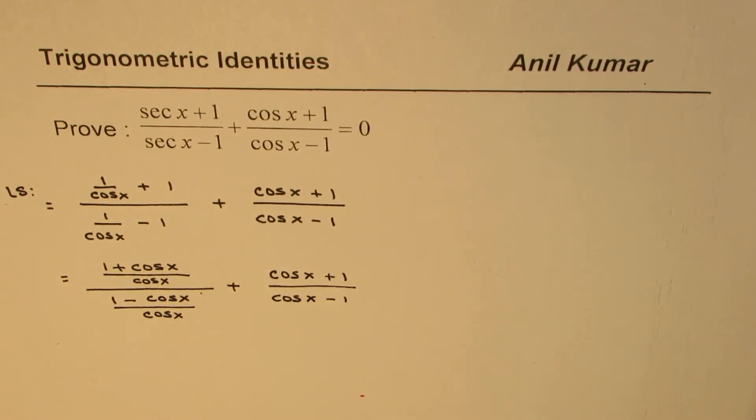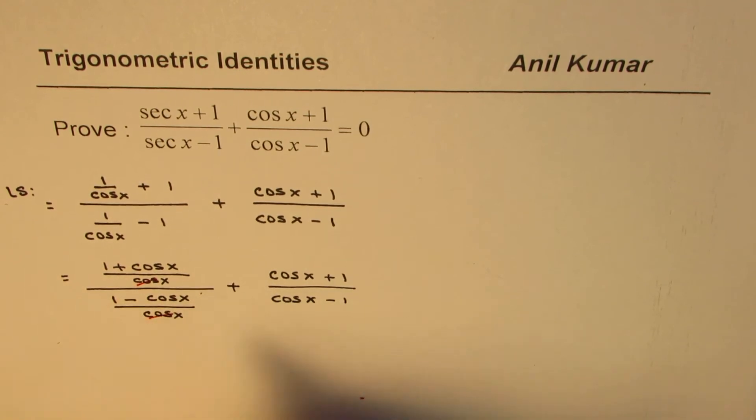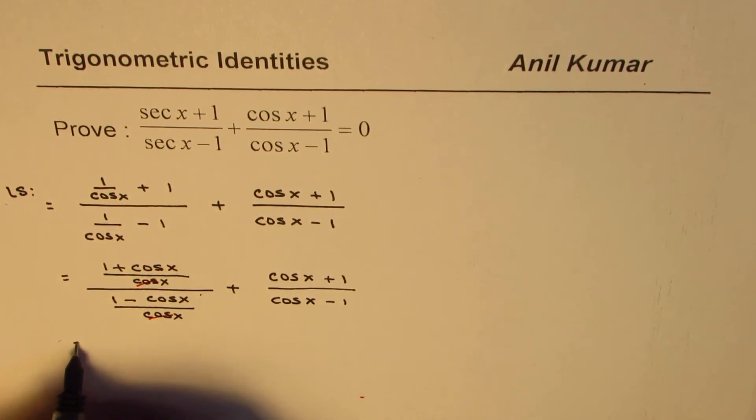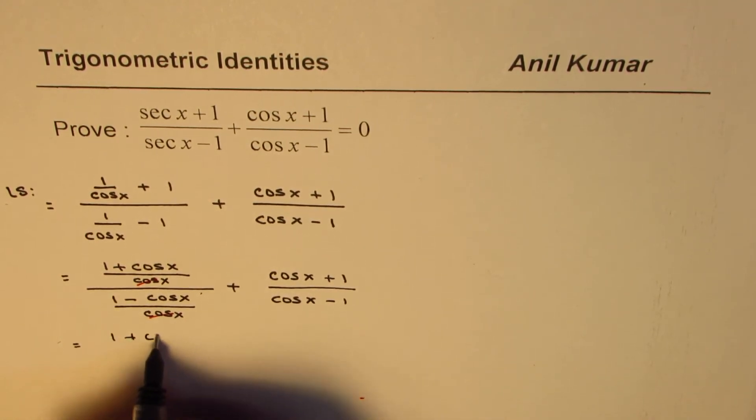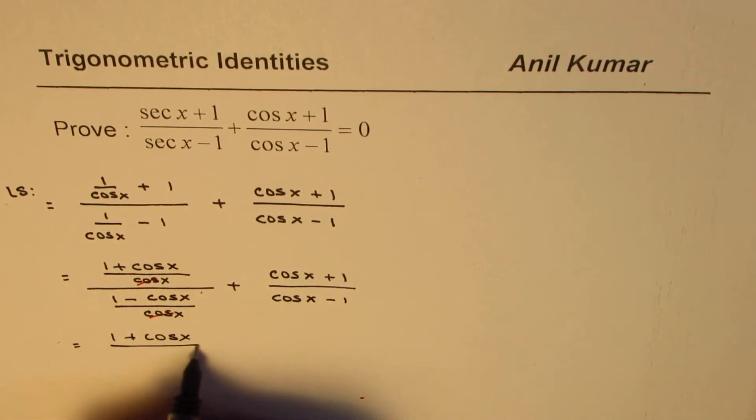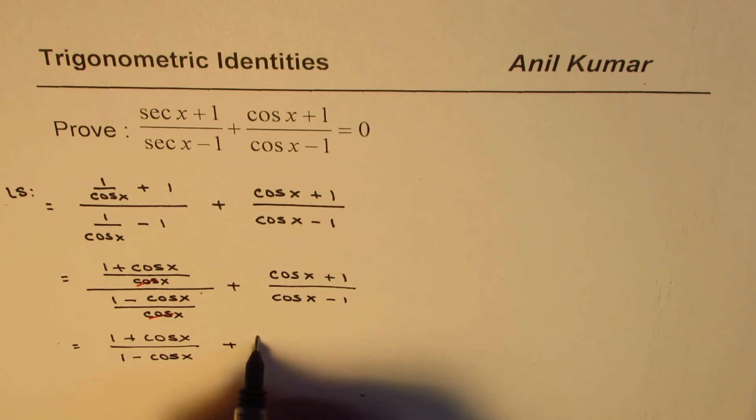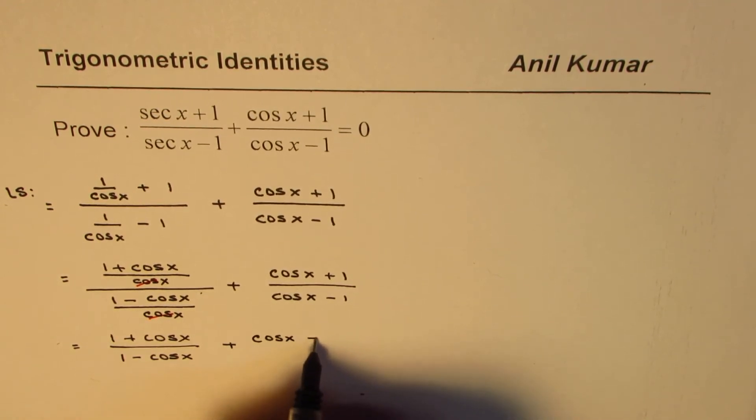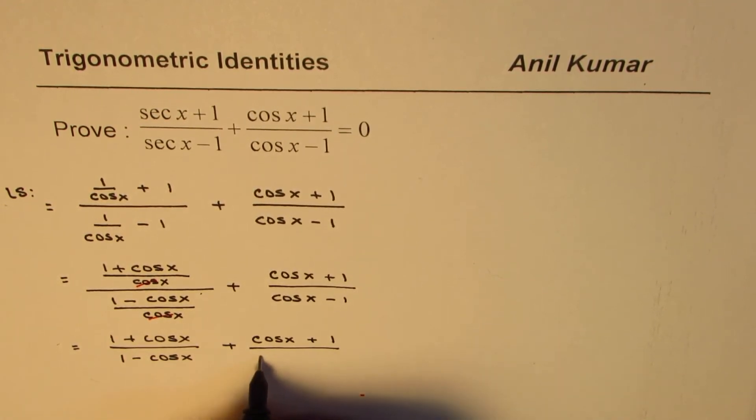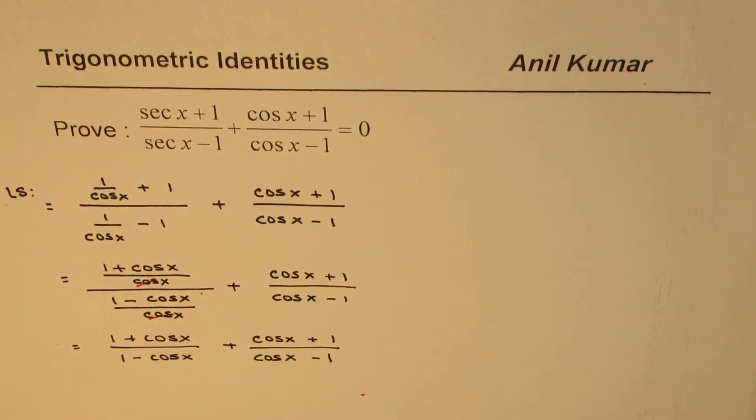Now, cos x and cos x get cancelled. So we are left with (1 + cos x)/(1 - cos x) + (cos x + 1)/(cos x - 1).